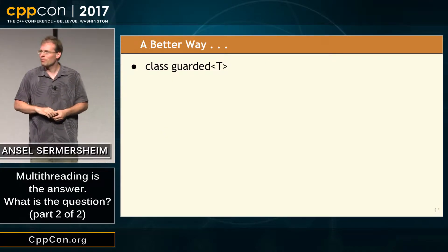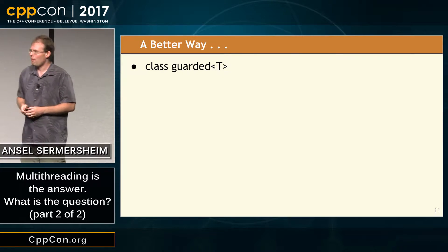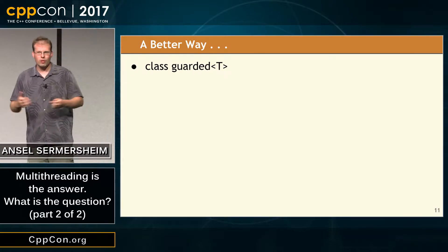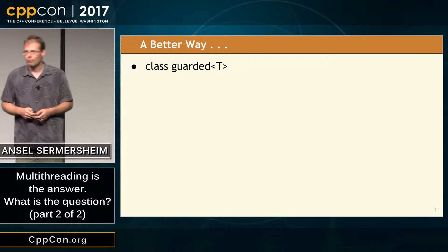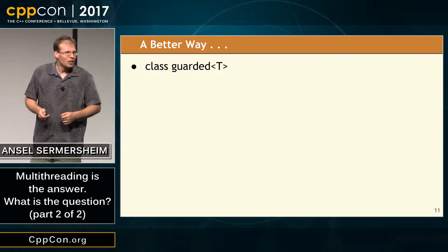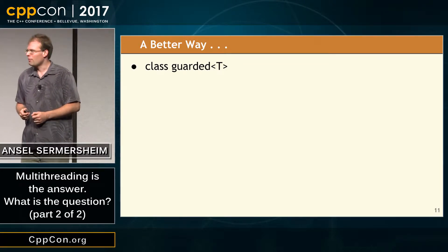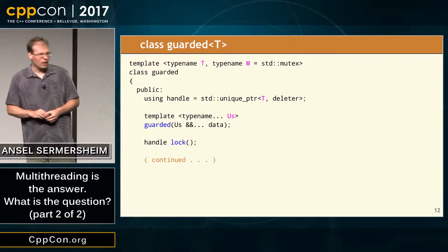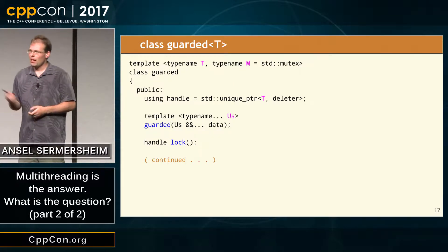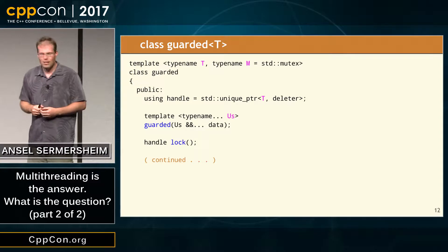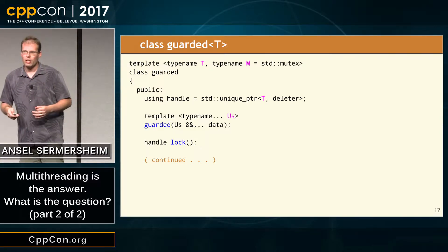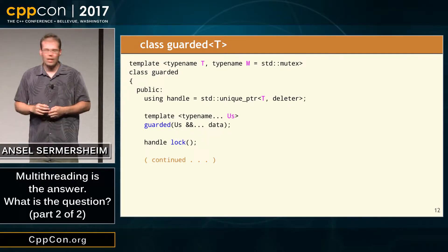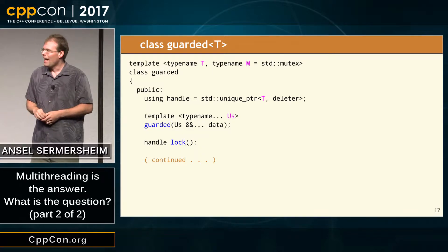There's a better way. We shouldn't have a mutex and an object as separate things, because they're not used as one consistent thing. We can encapsulate. So I'm going to set up a template called Guarded. Guarded is a container for some data and a lock. You can construct a Guarded — it has a templated constructor that passes whatever arguments you have into the contained data. And I have a function called lock.